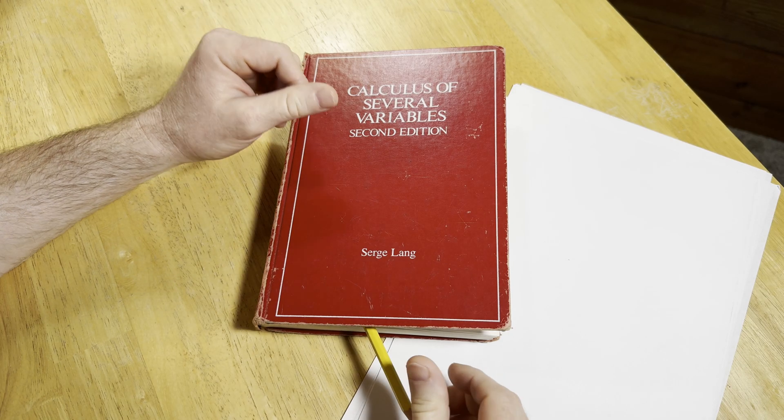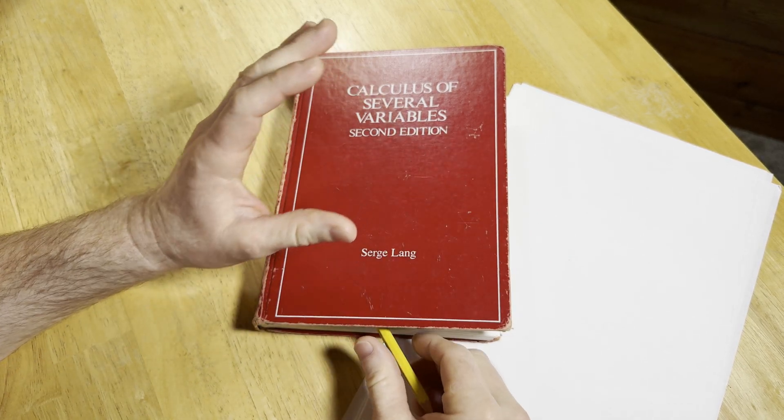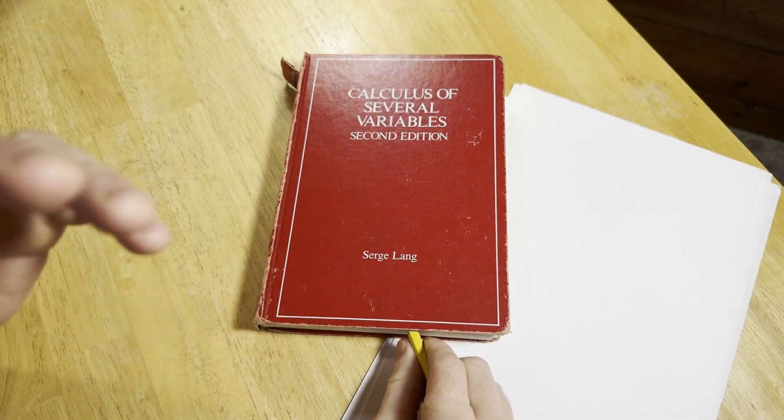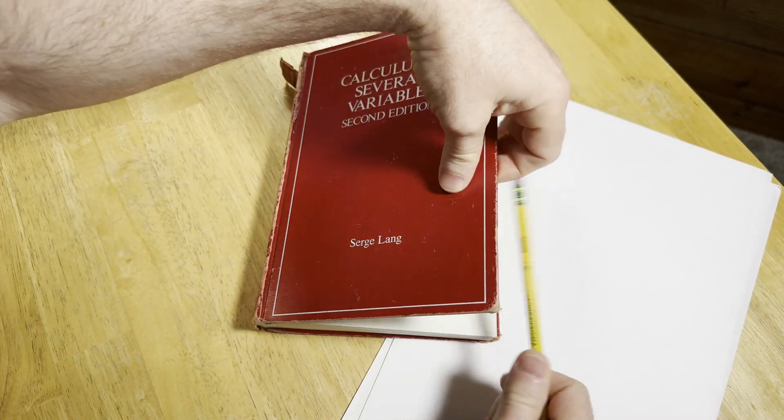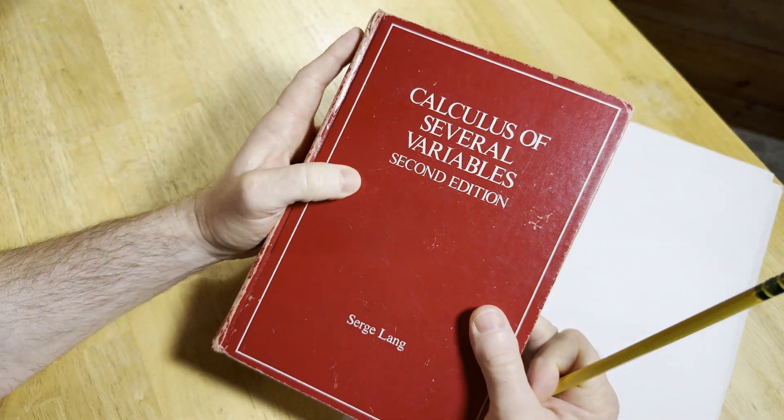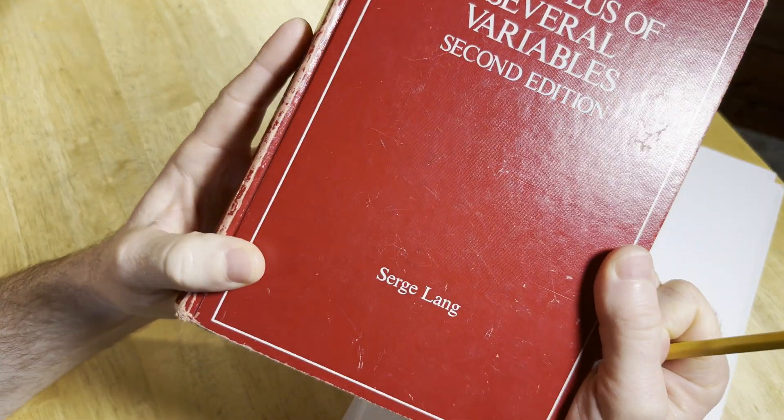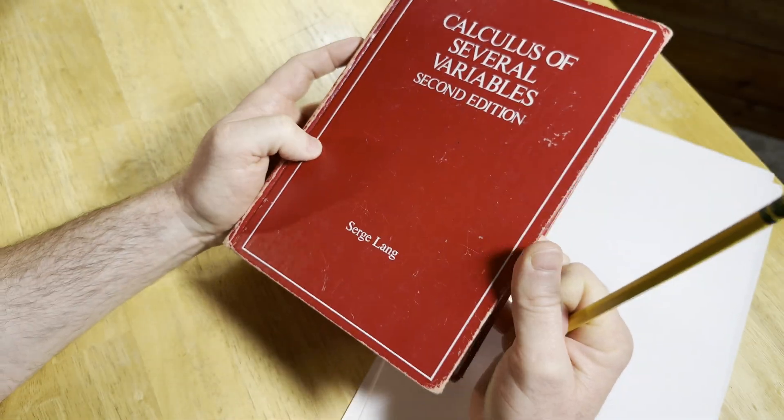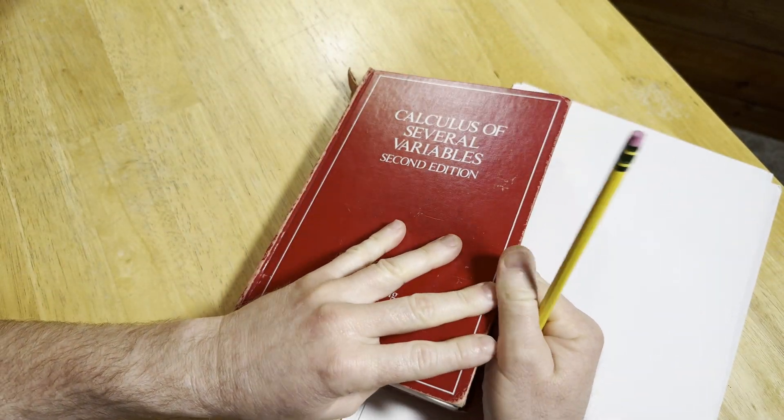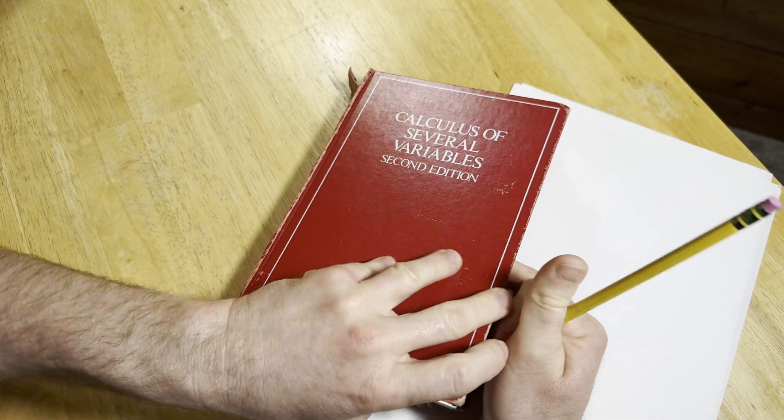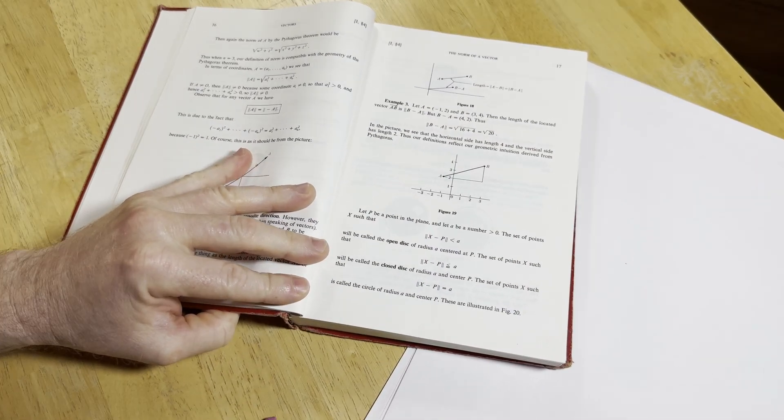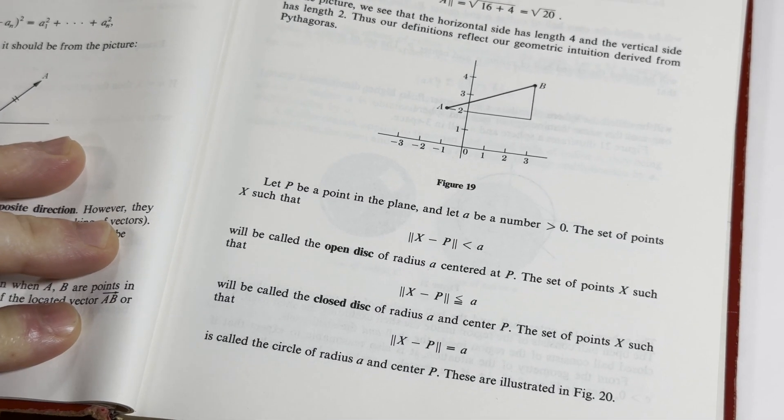Hello everyone, in this video we are going to briefly look at discs and balls in different contexts. So we're going to look at a small snippet from this wonderful text, Calculus of Several Variables by the famous Serge Lang. This is one of my favorite books in my collection, but let's get to the mathematics so we can learn some stuff.